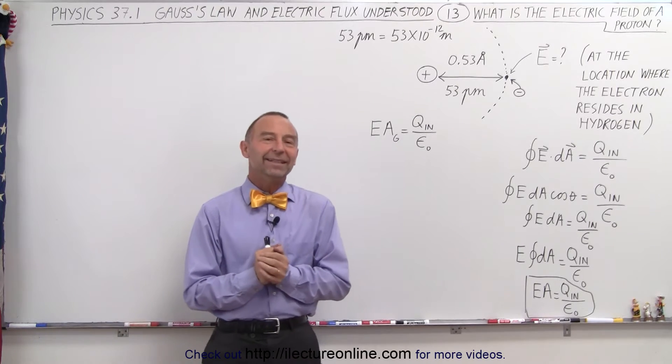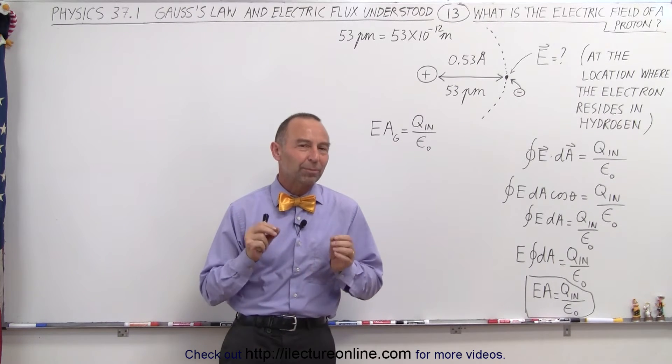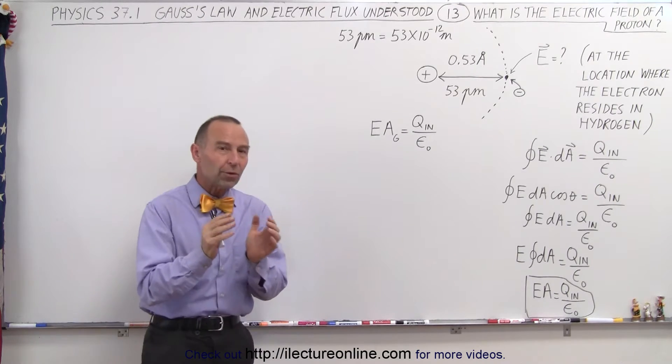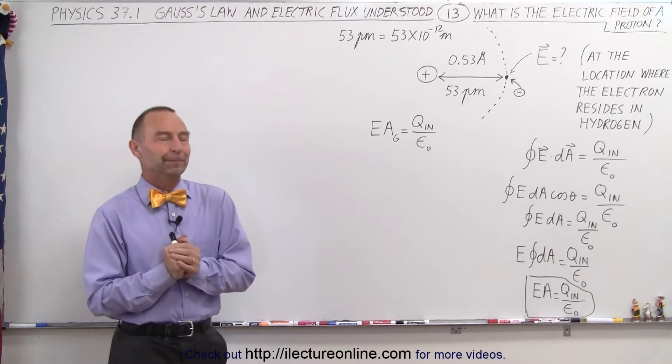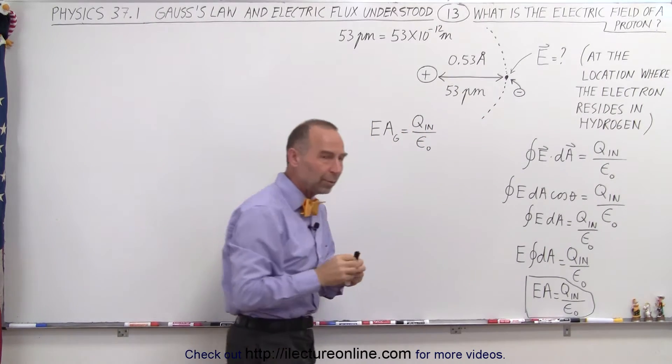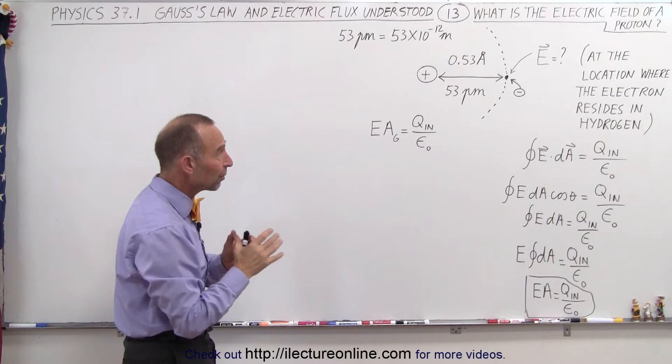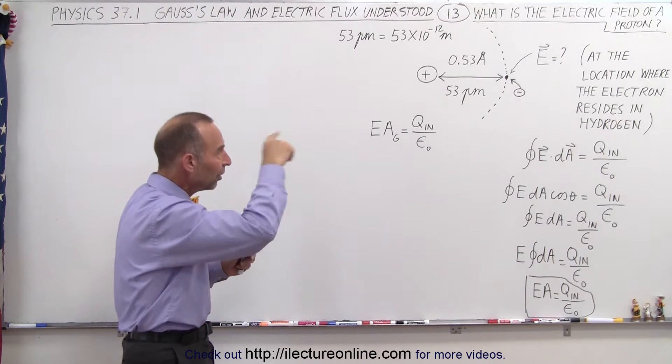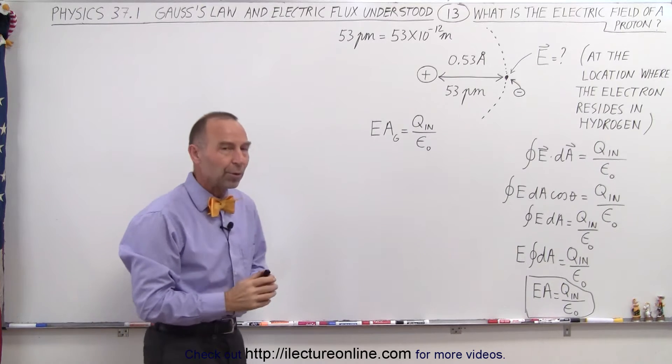Welcome to ElectronLine. In this video, we're going to explore the electric field around a proton, especially a proton inside a hydrogen atom. Because about 53 picometers away, which is 0.53 angstroms away, there's a small electron that zips around the nucleus of that atom, which is, of course, the proton.